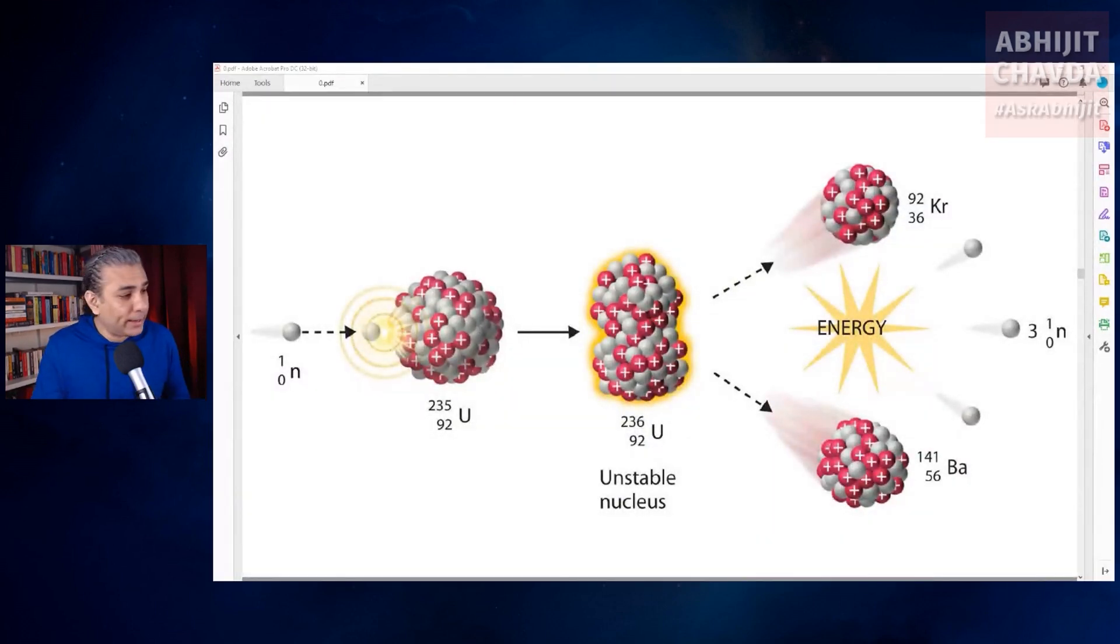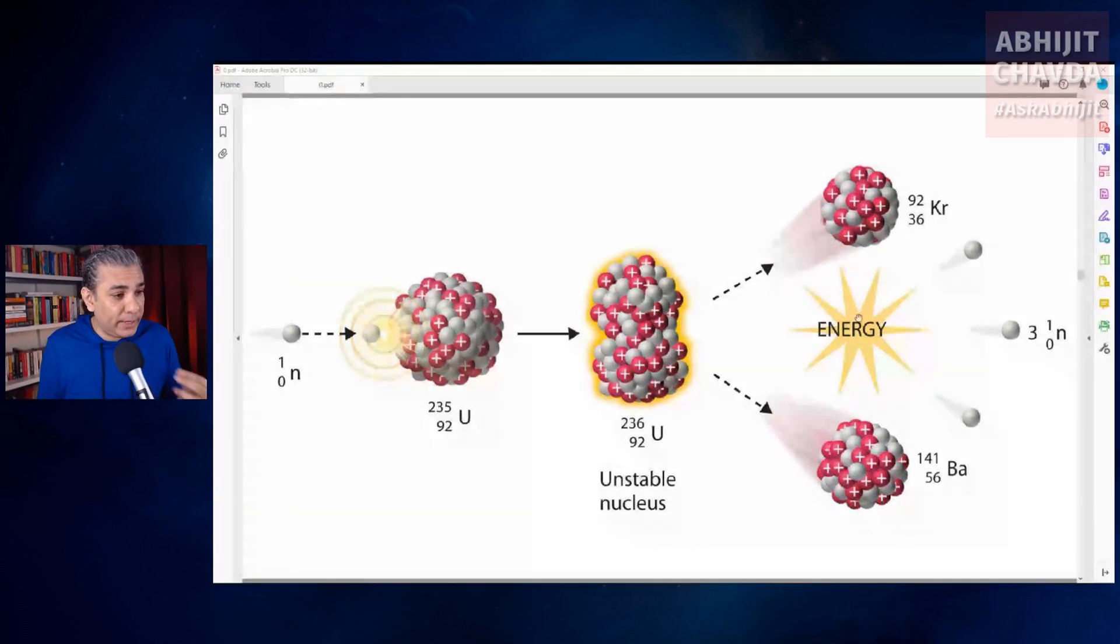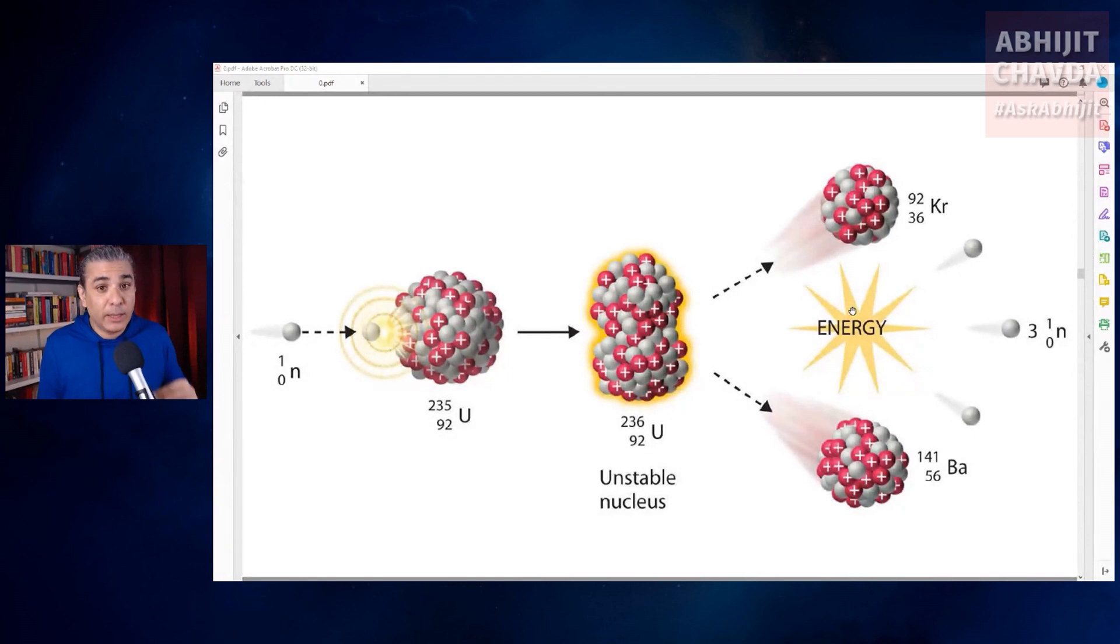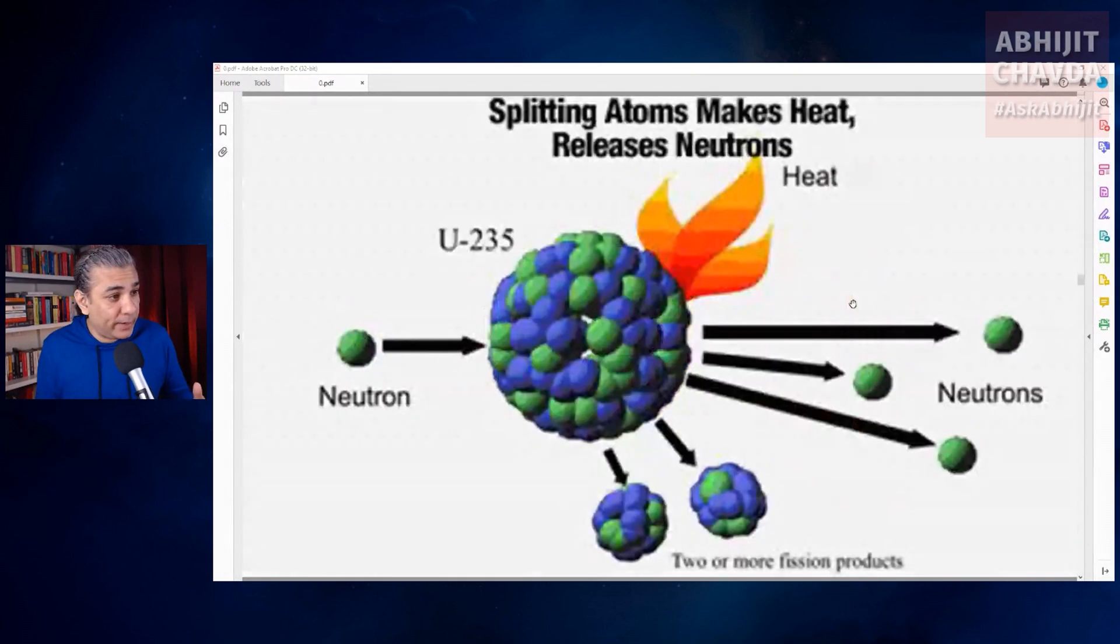When an atom undergoes fission, it splits into two and releases energy in the form of heat and gamma rays. The splitting of an atom releases a massive amount of heat and gamma radiation.